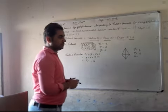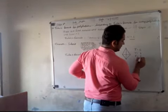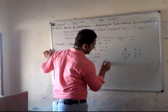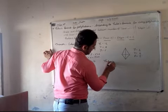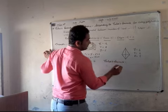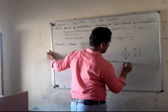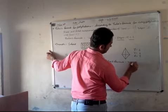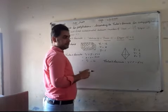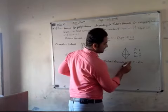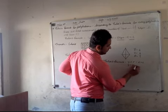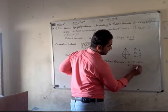Now we will see how many edges the pyramid has. You can see the upper edges. We have a formula for the vertex. We will count the edges of the pyramid.